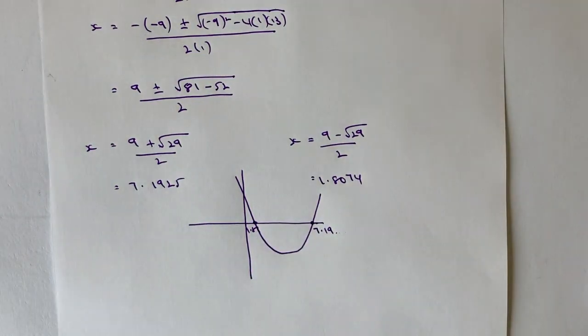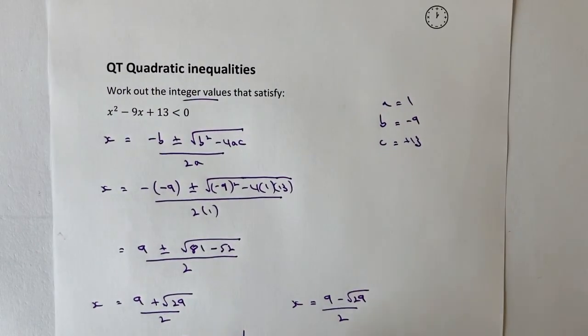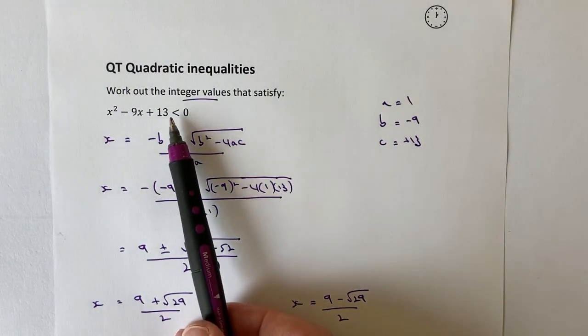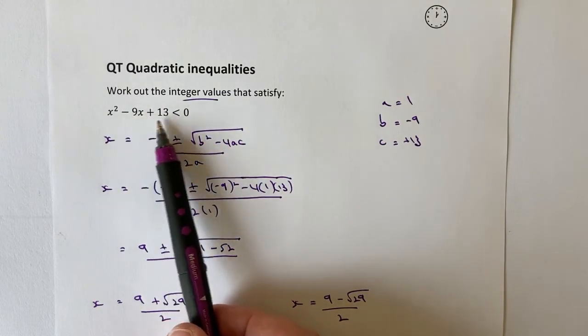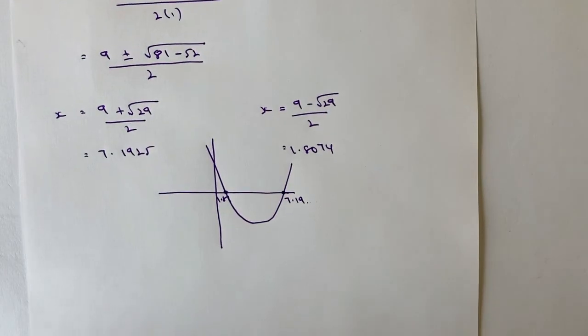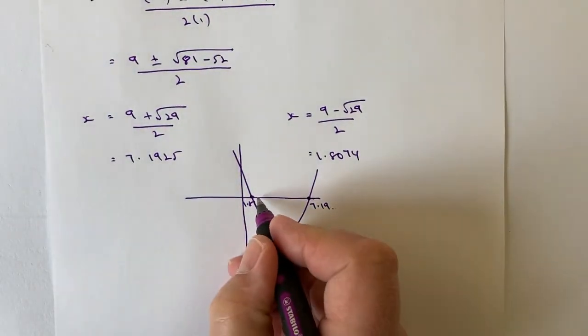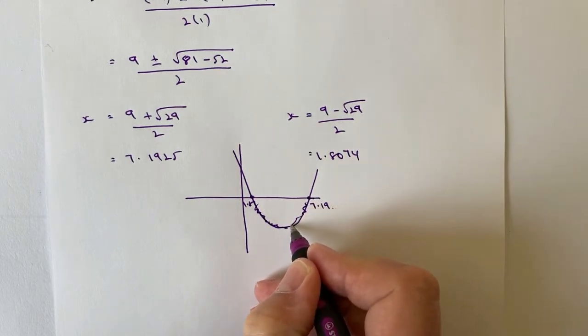The integer values, the whole number values that satisfy the inequality, are going to be between here and here, because we're looking at the values that are less than 0. Let's go back to our graph, and we're looking at values that are less than 0, so it's all these values along here.